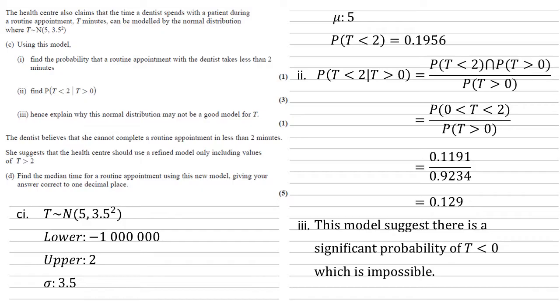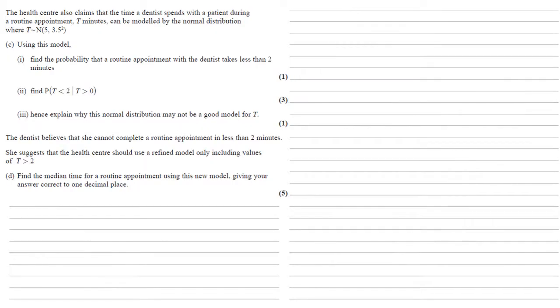This means the model suggests there is a significant probability of t being negative, which in real life is obviously impossible — an appointment cannot have a negative duration.